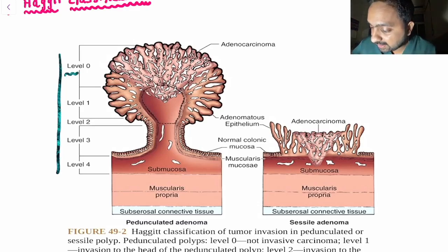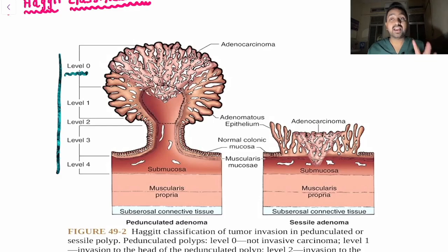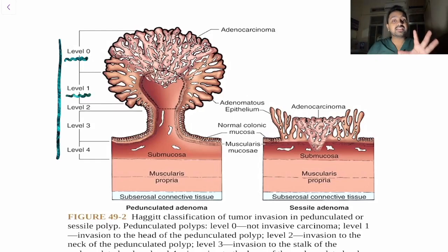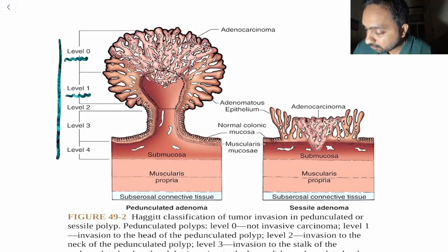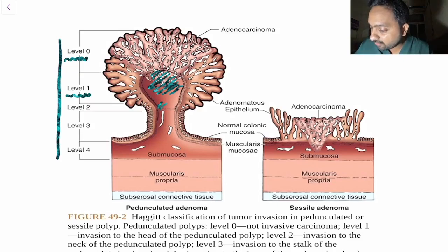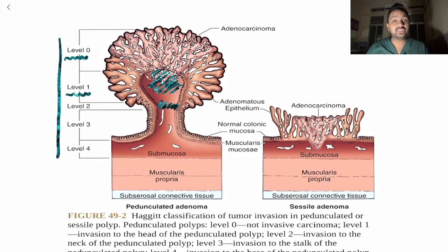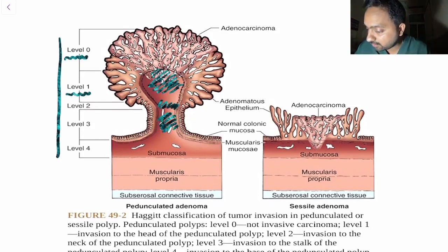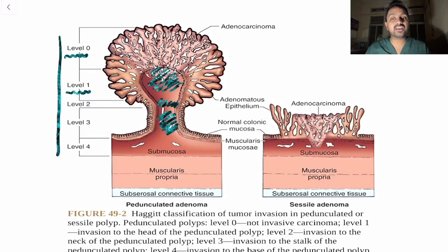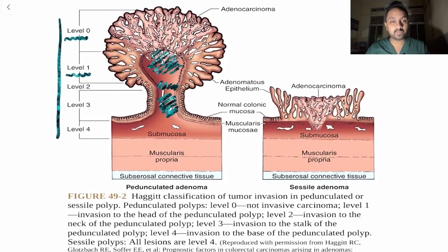In Haggitt classification: Level 0 means it is not invasive carcinoma. Level 1 is invasion into the head of the pedunculated polyp. Level 2 is invasion up to the neck of the polyp. Level 3 is invasion into the stalk of the polyp, and Level 4 is invasion into the base of the pedunculated polyp.